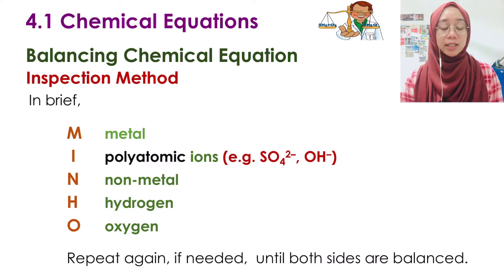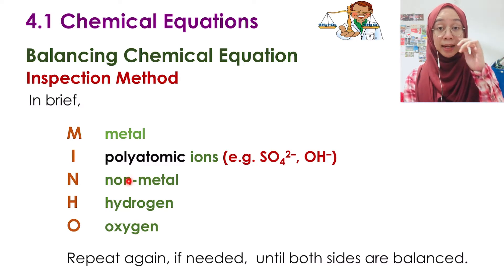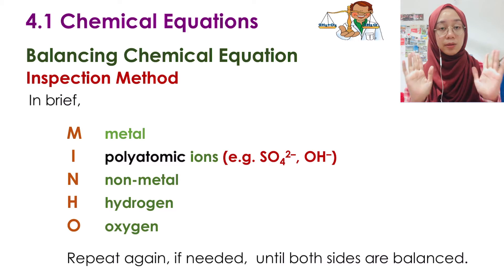Repeat again if needed until both sides are balanced. Basically, I will look at metal first. Balance the metal. If metal is already balanced, then go to the next one, ions. If ions are balanced, look at non-metal. Oh, non-metal is not balanced. So we try to balance non-metal. Usually when I balance, when suddenly at step three it's not balanced yet, I will check back from the top again. Because maybe when we're balancing the third step, it will disturb the number of metal atoms we have. There's that possibility. So check back from the top, is the metal still balanced. If it has changed, then you have to balance the metal again.